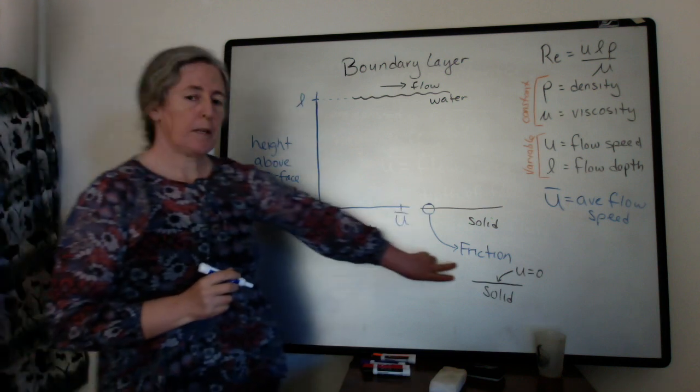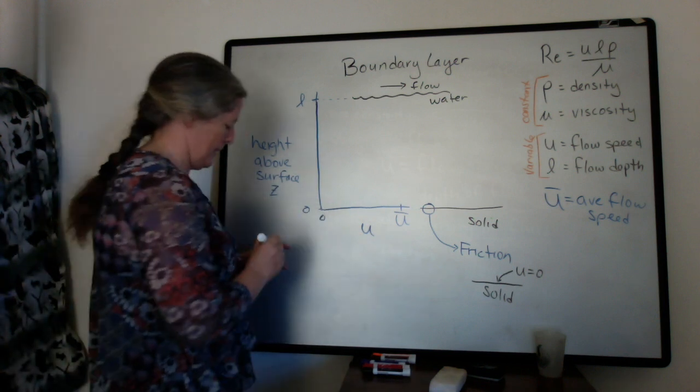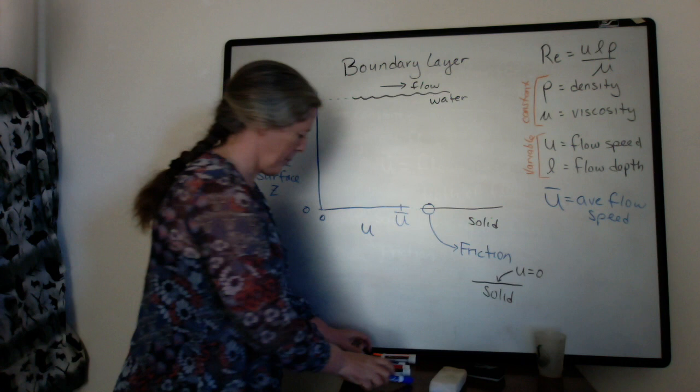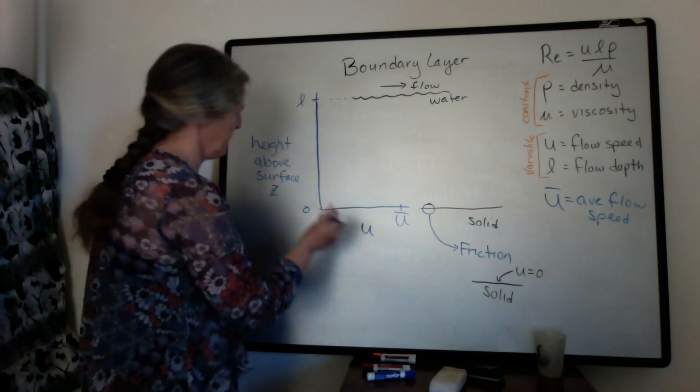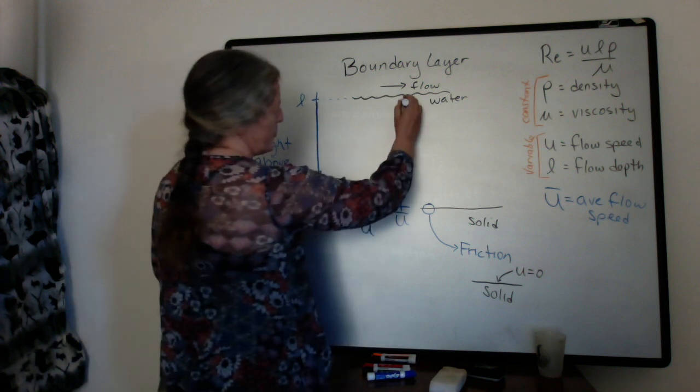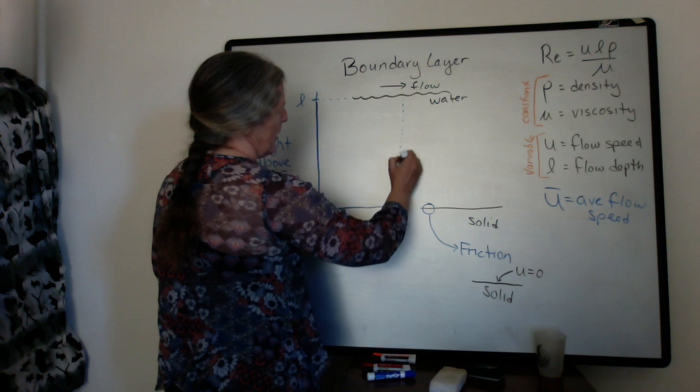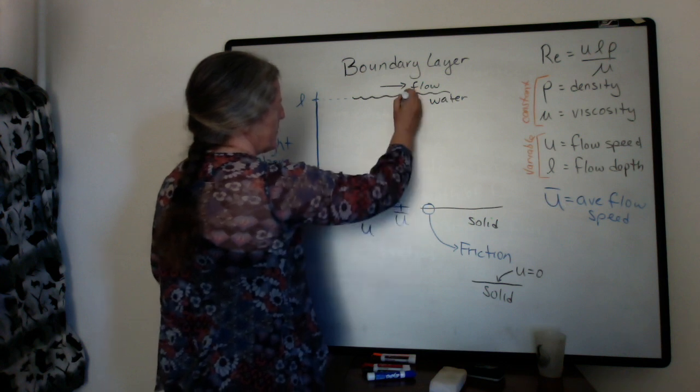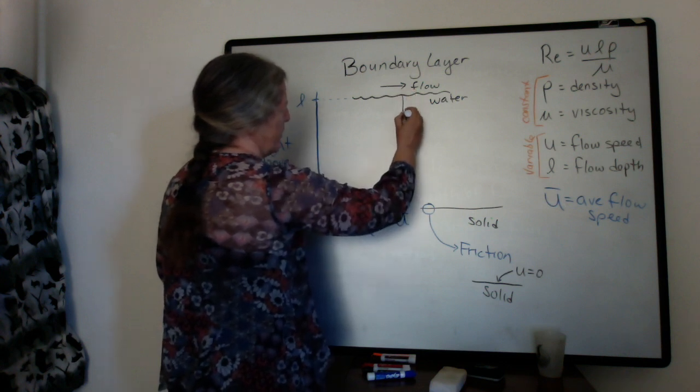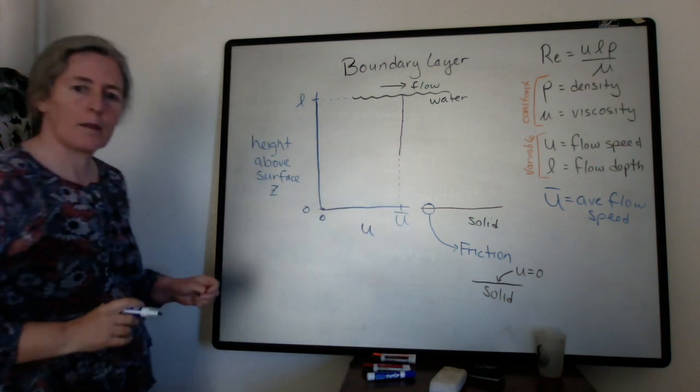We talked about the friction, so the flow speed right at the bottom here is zero. And then most of the flow is going at about the average flow speed. So most of the flow is going up like this.